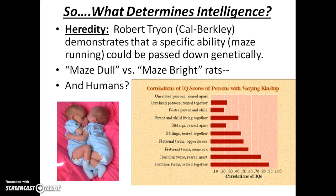What causes intelligence? What determines it? Adoption studies and twin studies are obviously very important. Starting with the influence of heredity, the most important researcher here is Robert Tryon at Cal Berkeley. He demonstrated that a specific ability — in this case, running a maze — could be passed down genetically in rats. He bred maze-dull rats together and maze-bright rats together, and with each successive generation, the maze-dull rats got worse and the maze-bright rats got better.